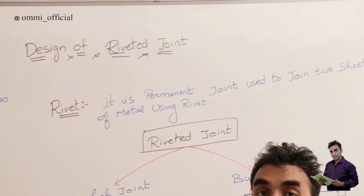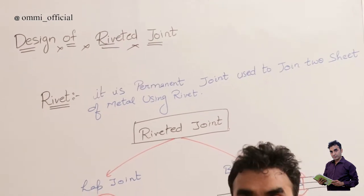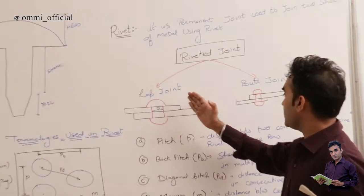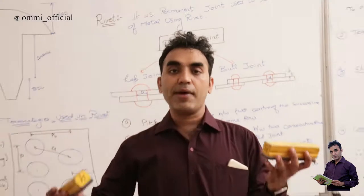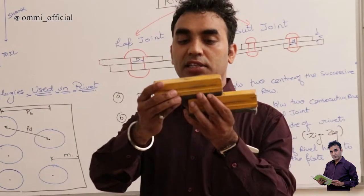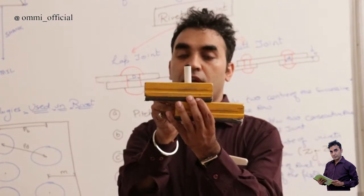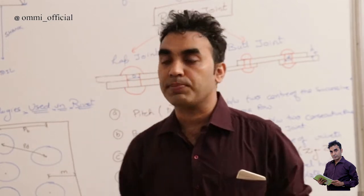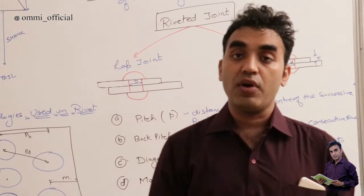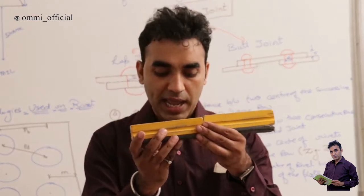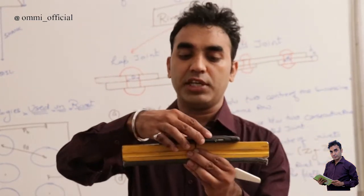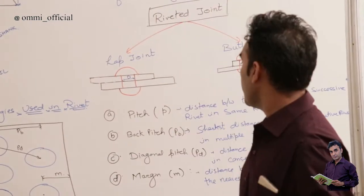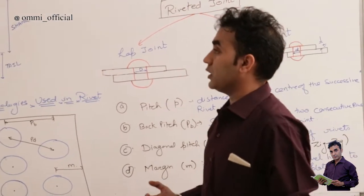A riveted joint is a permanent joint used to join two plates using rivets. It is bifurcated into two types: lap joint and butt joint. For example, if I place one plate on top of another and provide a rivet, that is a lap joint. But if I want to place them in the same parallel plane, I need a cover plate and two rivets — that type of joint is known as a butt joint.